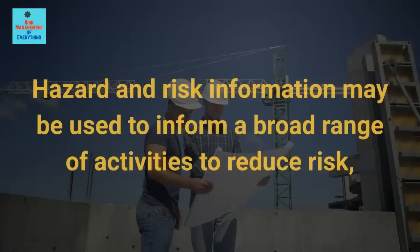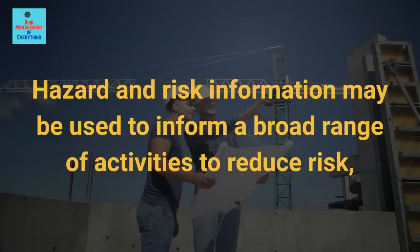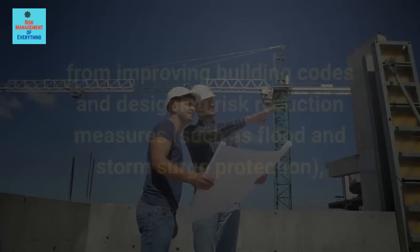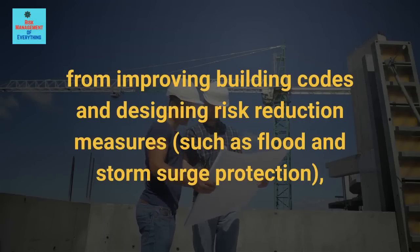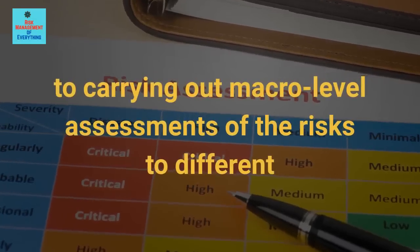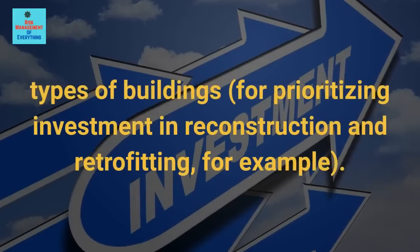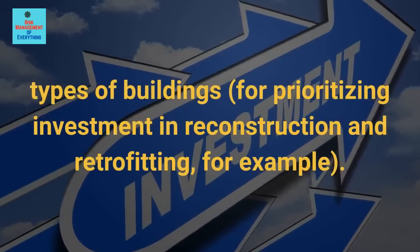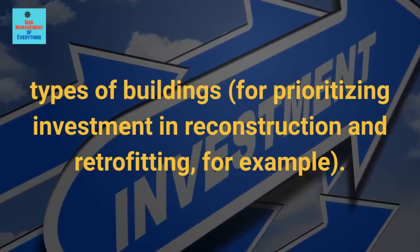The second is risk reduction. Hazard and risk information may be used to inform a broad range of activities to reduce risk, from improving building codes and designing risk reduction measures, such as flood and storm surge protection, to carrying out macro-level assessments of the risks to different types of buildings, for prioritizing investment in reconstruction and retrofitting.